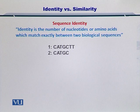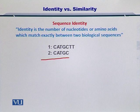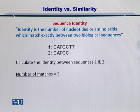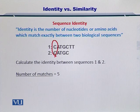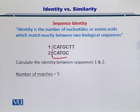So let's take a look at an example. Here you have two nucleotide sequences. Sequence number one is C-A-T-G-C-T-T, and sequence number two is C-A-T-G-C. I would like to compare these two sequences and evaluate their similarity. The first thing I need to do is count how many matches exist between these two sequences. The first nucleotide C matches, the second nucleotide A also matches, and similarly the next three nucleotides T, G, and C also match. So in total, you have five nucleotides that are matching exactly between these two sequences.